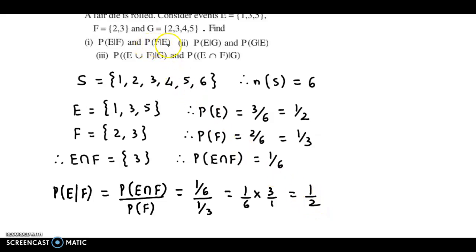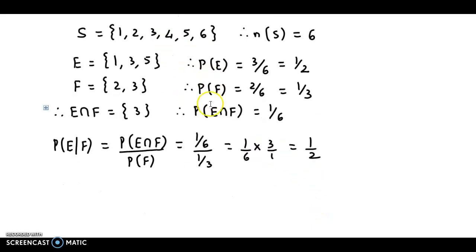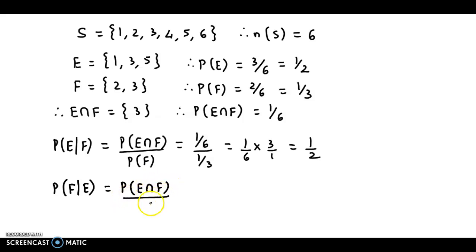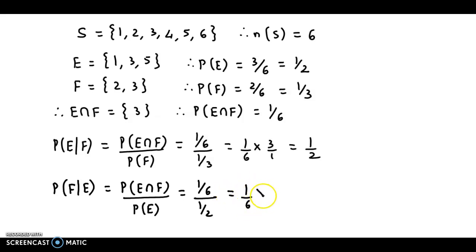Next, probability of F given E. This would be probability of E intersection F upon probability of E. E intersection F probability is 1/6 and E's probability is 1/2. Simplifying: 1/6 × 2/1, which equals 1/3.